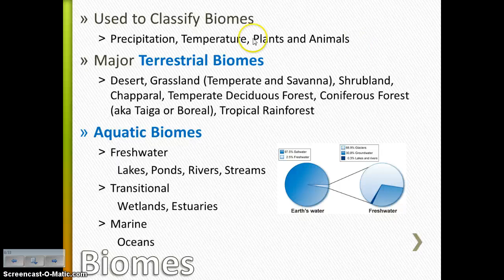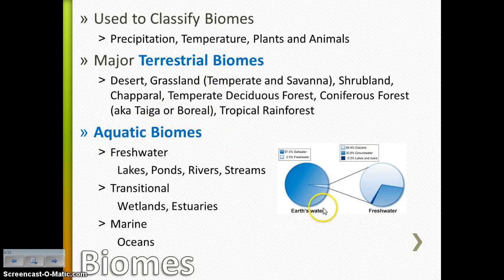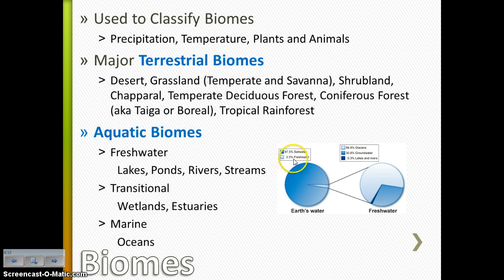So there are your major terrestrial biomes, or land biomes. Here are your major aquatic biomes. Here's this lovely little pie graph showing you that of all the water we have on Earth, 98% of it is salt water. Only 2% of it is fresh water. And of that tiny 2%, most of that is glaciers and most of that is groundwater. A very small amount is going to be lakes and rivers.